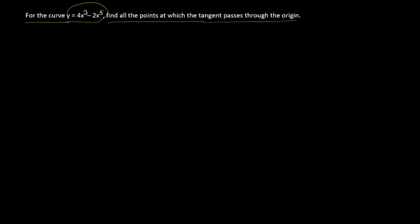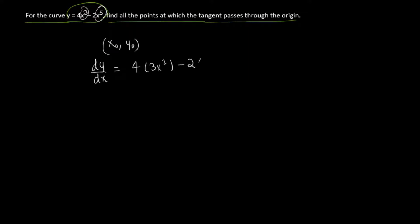At any point x, you can find the slope of the tangent using the derivative function. dy/dx in this case is equal to 4 times the derivative of x³, which is 3x², minus 2 times the derivative of x⁵, which is 5x⁴. This gives you 12x² - 10x⁴.